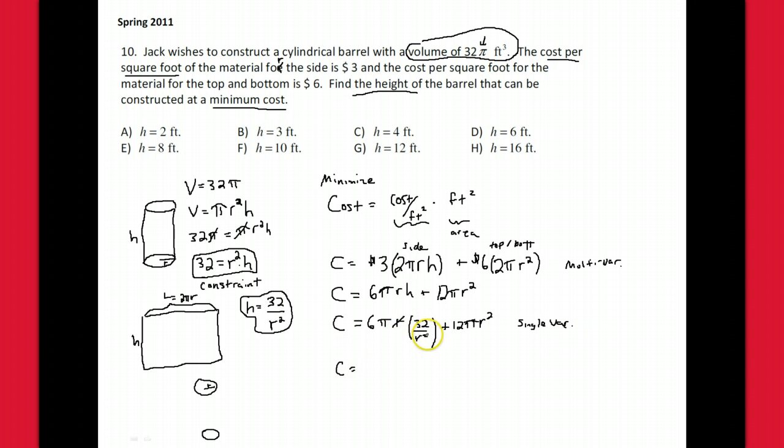This r canceled with one of these r's. If we do 32 times 6, that's 192π. Make it easier to take the derivative if we go with r to the negative one, and then 12πr².